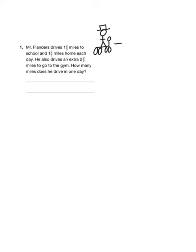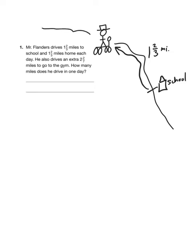Here he is in his car. Obviously this is an amazing drawing of a car. First he's gonna go one and two-thirds miles to get to school. Here's the school. And then he has to go one and two-thirds miles to get back home again. And then he also drives an extra two and seven-tenths miles to go to the gym. So maybe the gym is in some other direction. Here, gym. And that is two and seven-tenths of a mile.